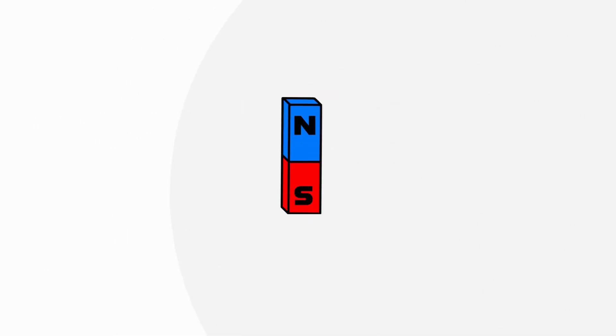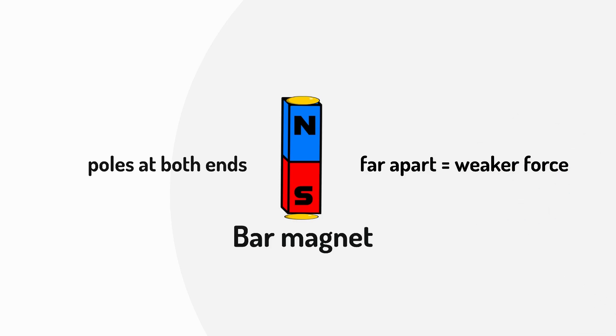Let's look at the different types of magnets and how their shape affects their strength. Firstly, bar magnets: the poles are small and far apart, so they're weaker for lifting but good for experiments.